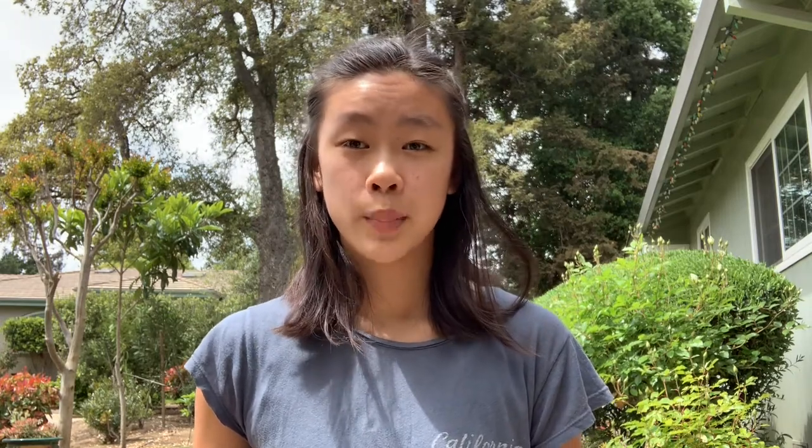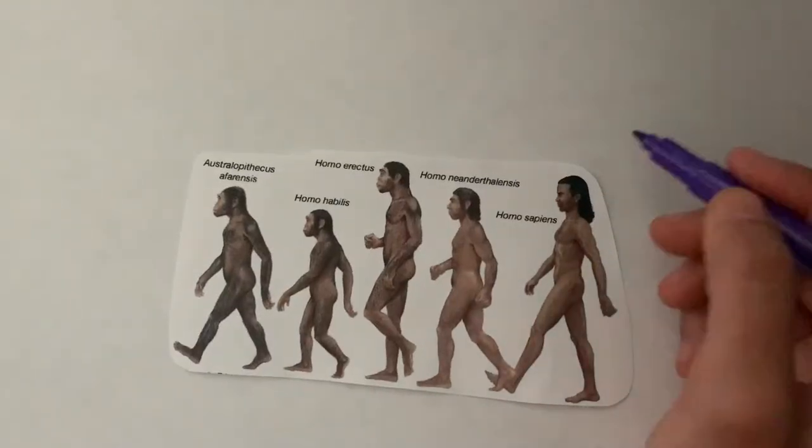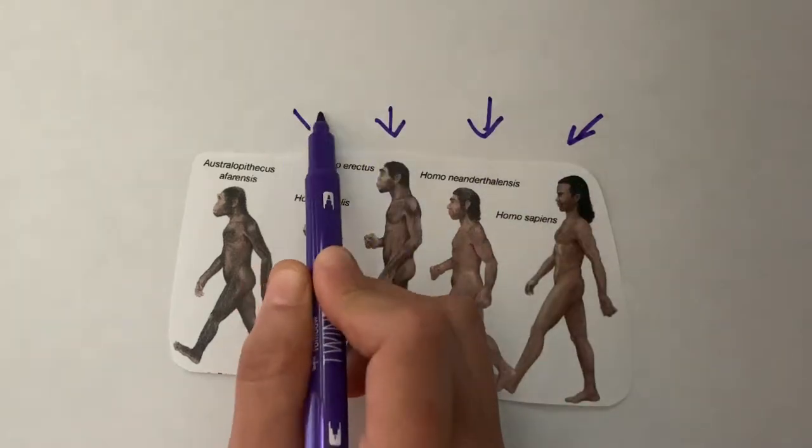So where do humans actually come from and how do we know? Today we are called homo sapiens, but before this we were homo neanderthalensis, homo erectus, and homo habilis.